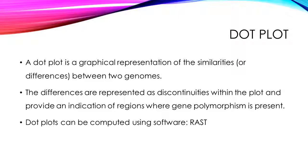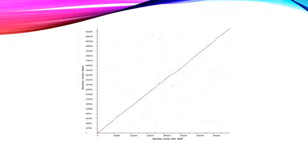A dot plot is a graphical representation of the similarities or differences between two genomes. These differences are represented as discontinuities within the plot, making dot plots useful for identifying regions of the genome which are discontinuous. In this example, the dot plot is developed using Bacillus cereus as a reference — specifically the Bacillus cereus ATCC strain. As you can see, there are certain discontinuities in the plot which indicate differences in the genome, and by zooming in on these, one can identify specific regions which have evolved or mutated.